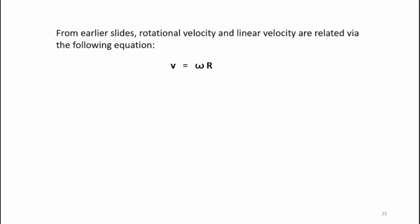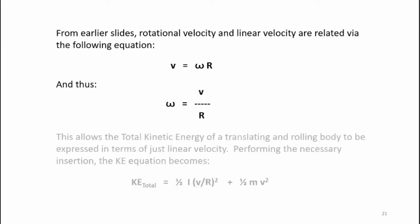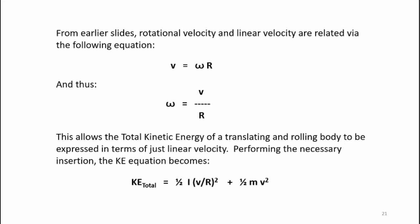Now, earlier we determined that velocity was equal to omega r, and thus omega equals v divided by r. This allows the total kinetic energy of a translating and rotating body to be expressed in terms of just linear velocity. By performing the necessary insertions, the kinetic energy equation becomes KE total equals one-half times the moment of inertia times v divided by r squared plus one-half mv squared.